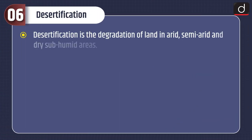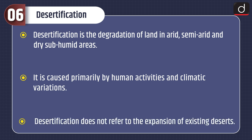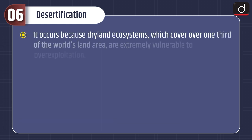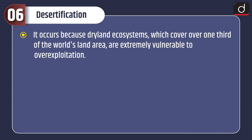Now let's discuss about desertification. Desertification is the degradation of land in arid, semi-arid and dry sub-humid areas. It is caused primarily by human activities and climatic variations. Desertification does not refer to the expansion of existing deserts. It occurs because dryland ecosystems, which cover one-third of the world's land area, are extremely vulnerable to over-exploitation.